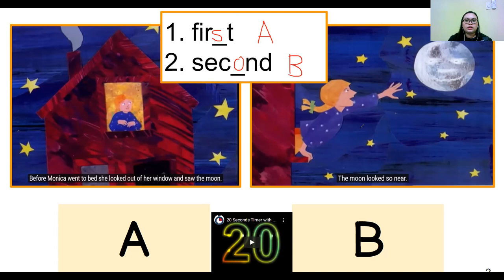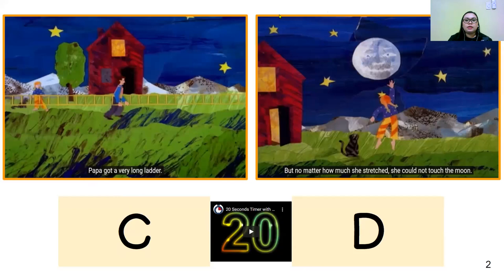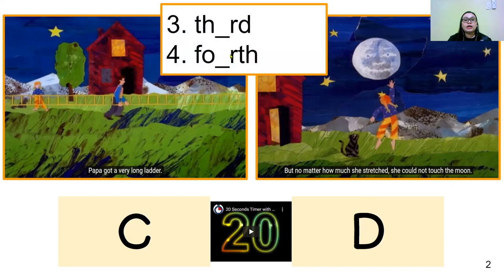Let's go to the next one. C: Papa got a very long ladder. Can you please read letter C? Letter D: But no matter how much she stretched, she could not touch the moon. Can you read letter D? Copy the number, the letters, write the missing letter, and the letter of your answer — which came third and which came fourth? Twenty seconds starts now.